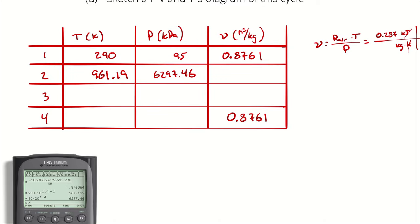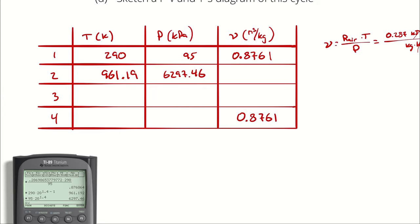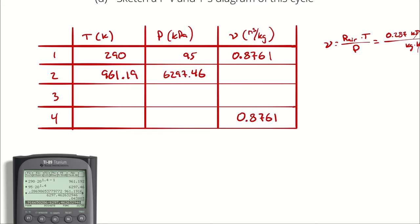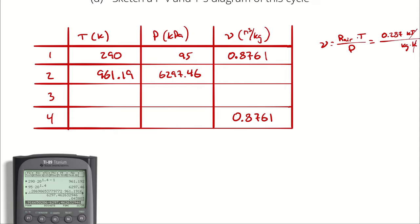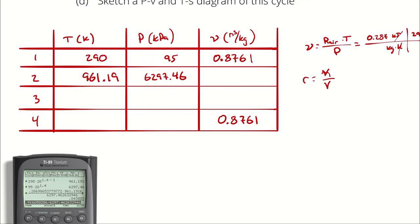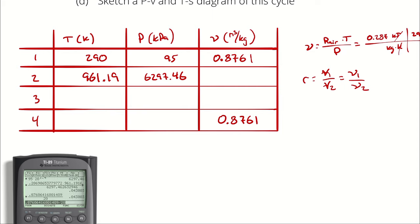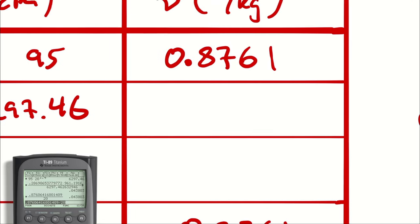For specific volume at state 2, we can either use the ideal gas law: V2 = R·T2/P2 = 0.287 × 961.19 / 6297.46 = 0.0438 m³/kg, or simply divide V1 by the compression ratio: V2 = 0.8761 / 20 = 0.0438 m³/kg. Getting the same answer both ways confirms no isentropic calculation error was made.